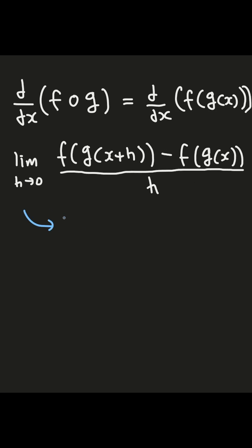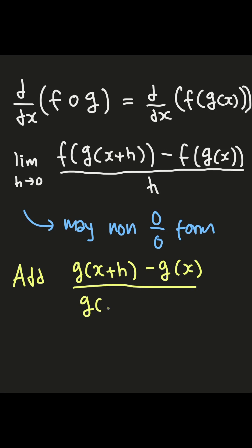We know that this definition may lead to non-zero over zero. So if we add a g minus g term, just like this, it may be non-zero over zero for h approaching to some value a, which maybe zero.